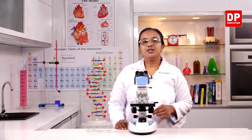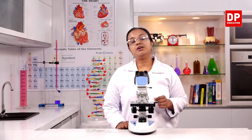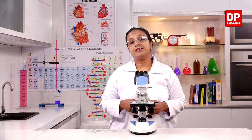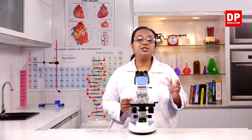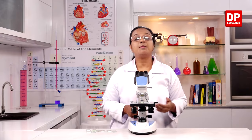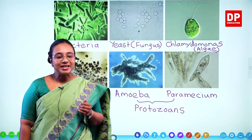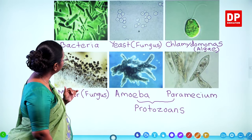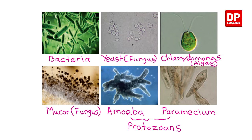So we observed different permanent slides and saw they were all microorganisms — mostly unicellular organisms, except for the fungus mucor which had a different structure. You were able to identify the different types: bacteria, yeast, chlamydomonas, mucor, amoeba, and paramecium.